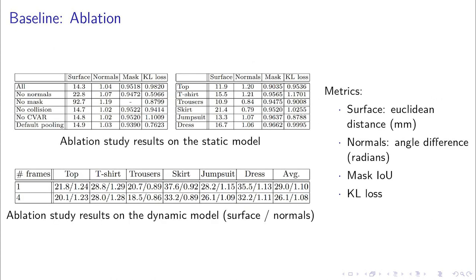These tables show the results of the ablation study. We use as metrics the surface error in millimeters, the angle difference in radians for the normals as a metric of surface quality, the intersection over union for the body mask, and the KL-divergence loss as a metric of how meaningful is the latent space.